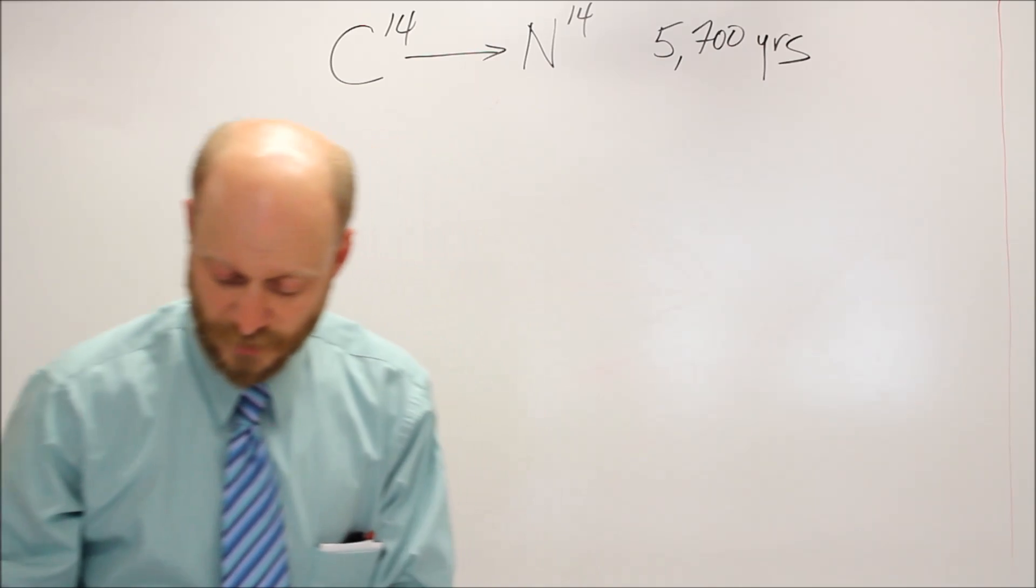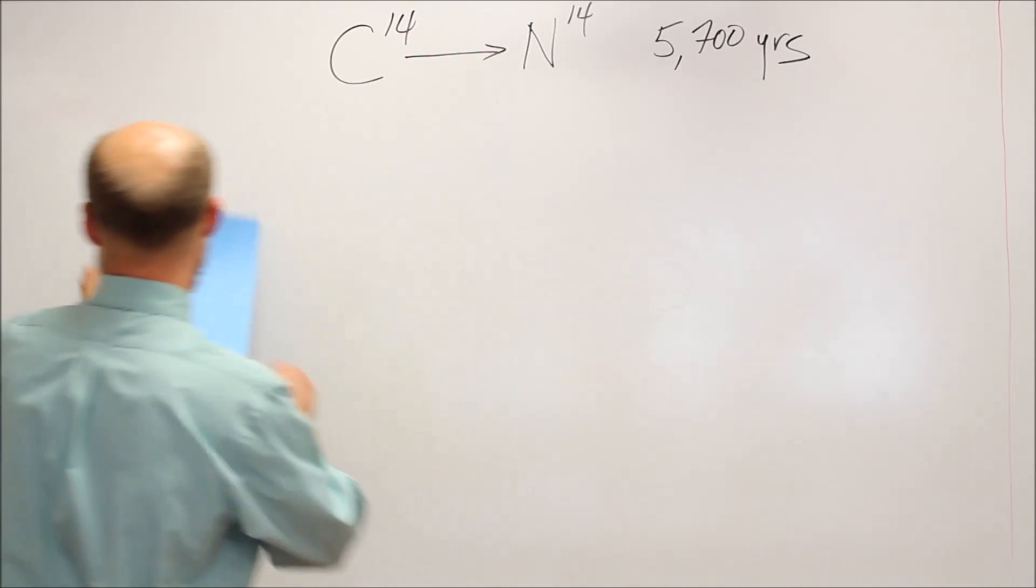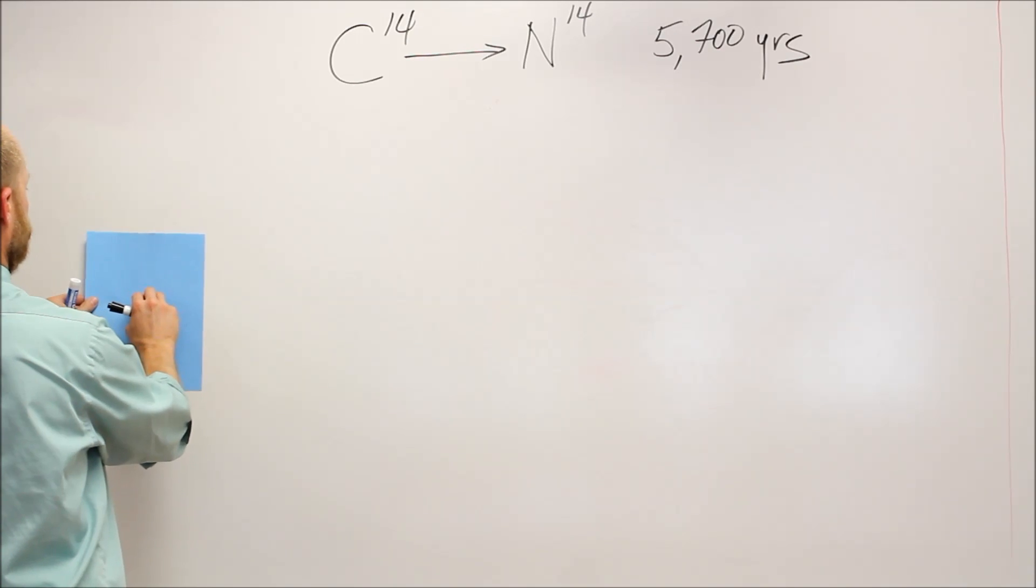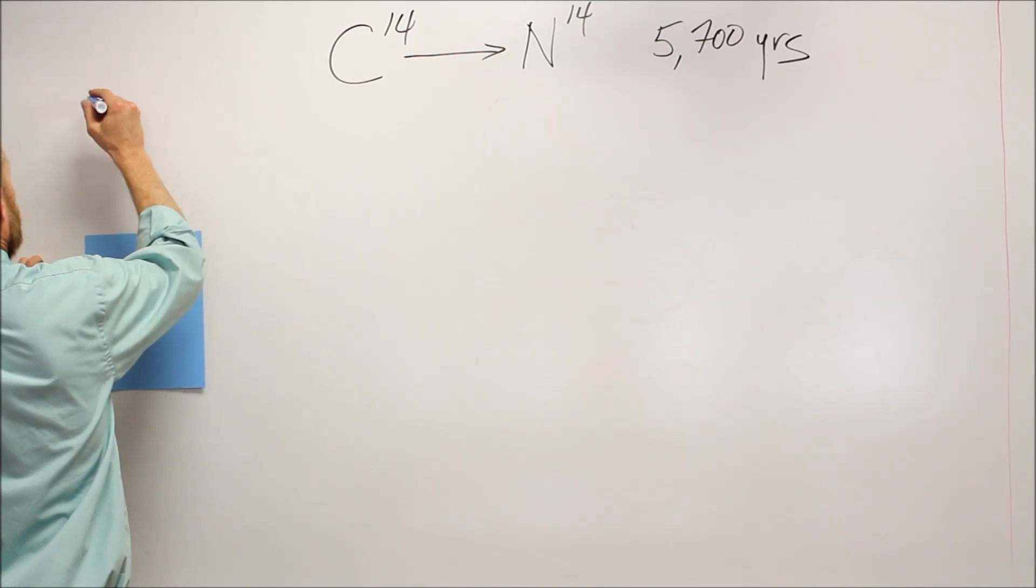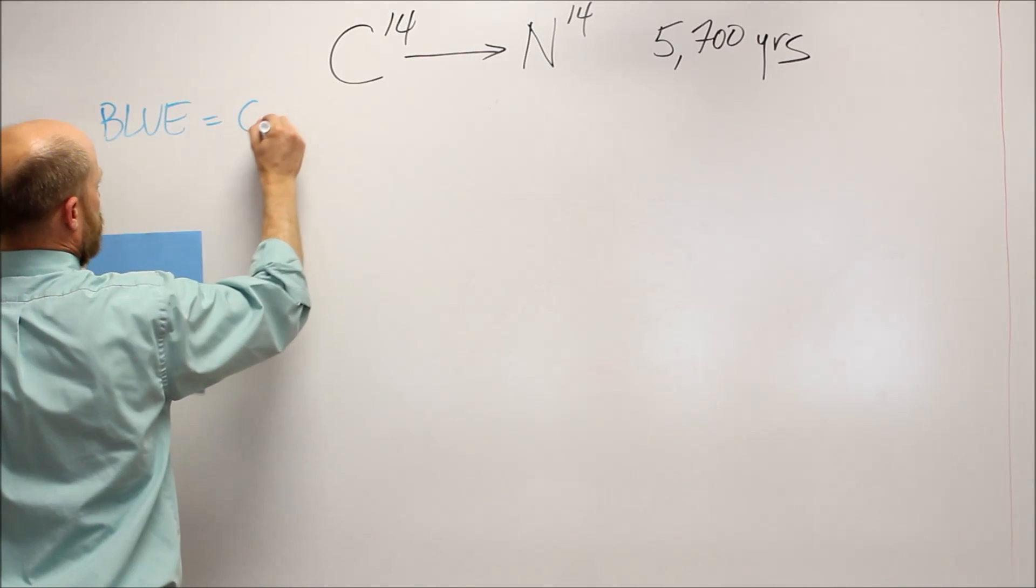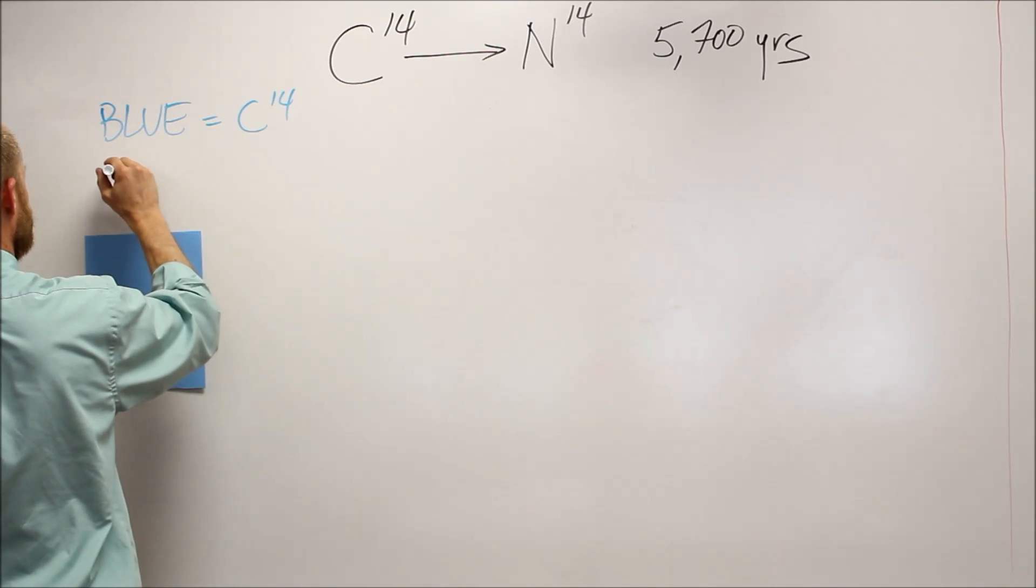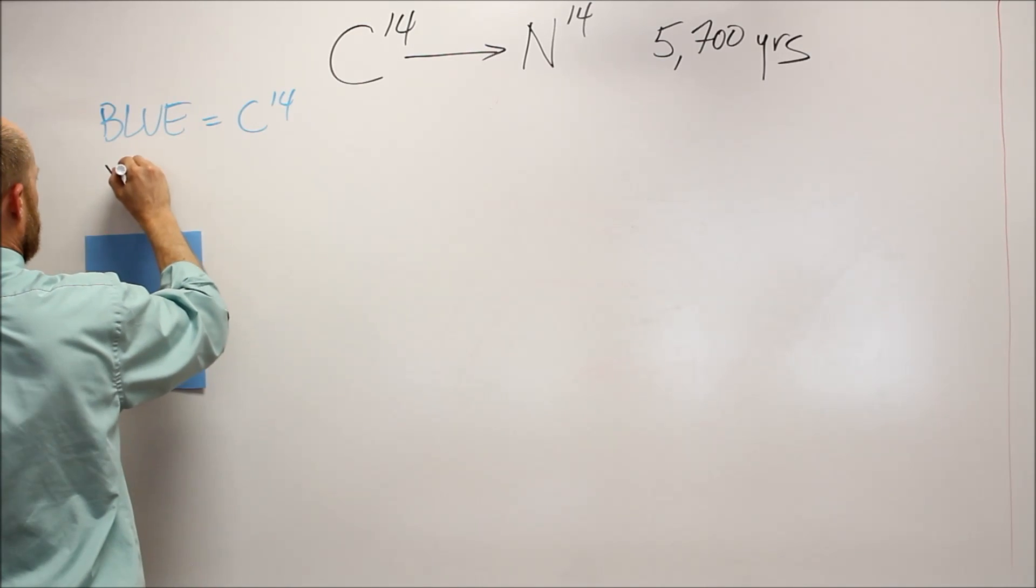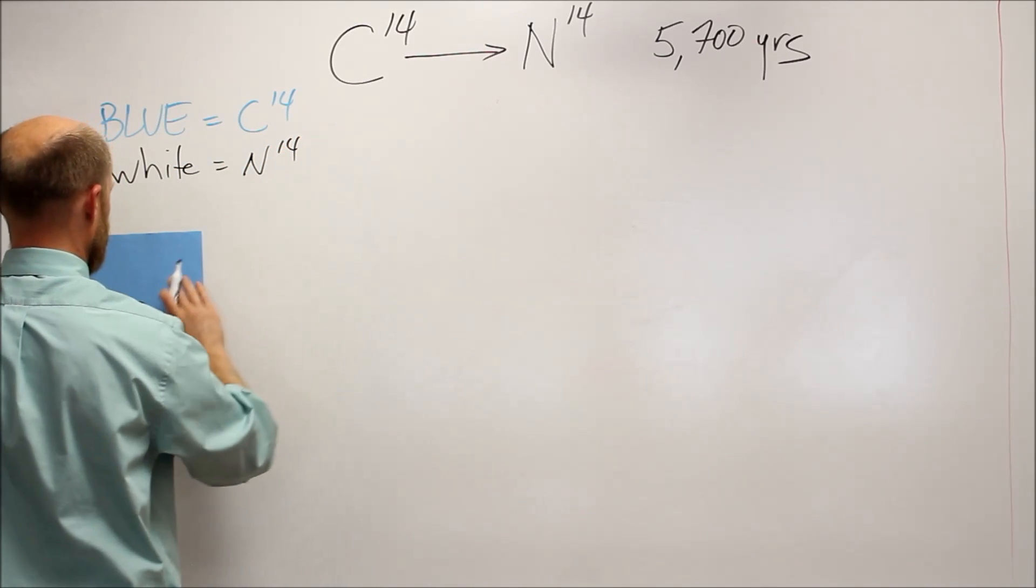I'm going to use blue paper. In this case, what I'm going to do is, I'm going to say the blue paper represents carbon-14. This is right at the, I'm going to write this in. The blue is carbon-14 in our example, and then the white, you'll see in a second. The white is nitrogen-14. Here we go.